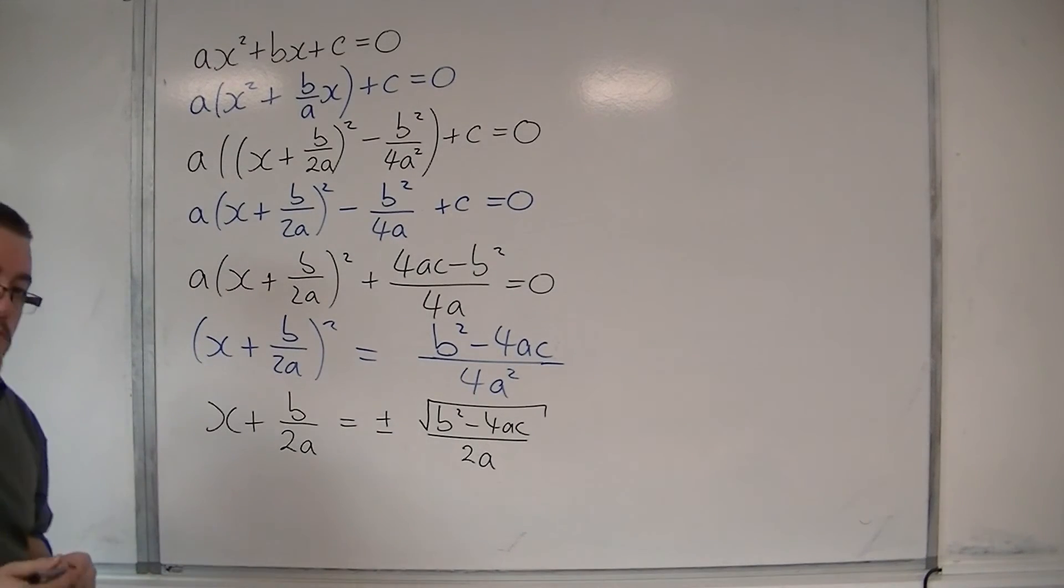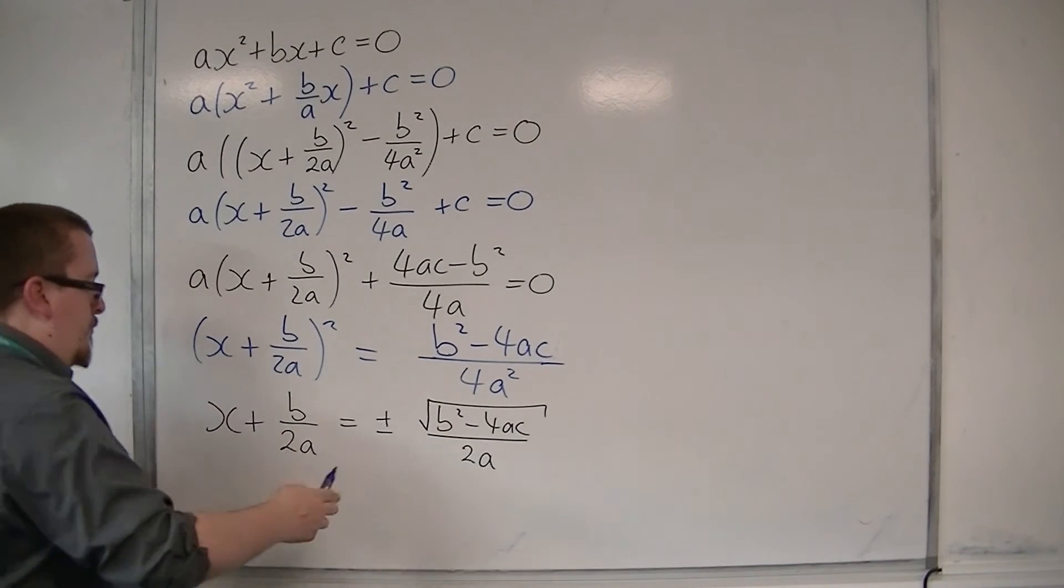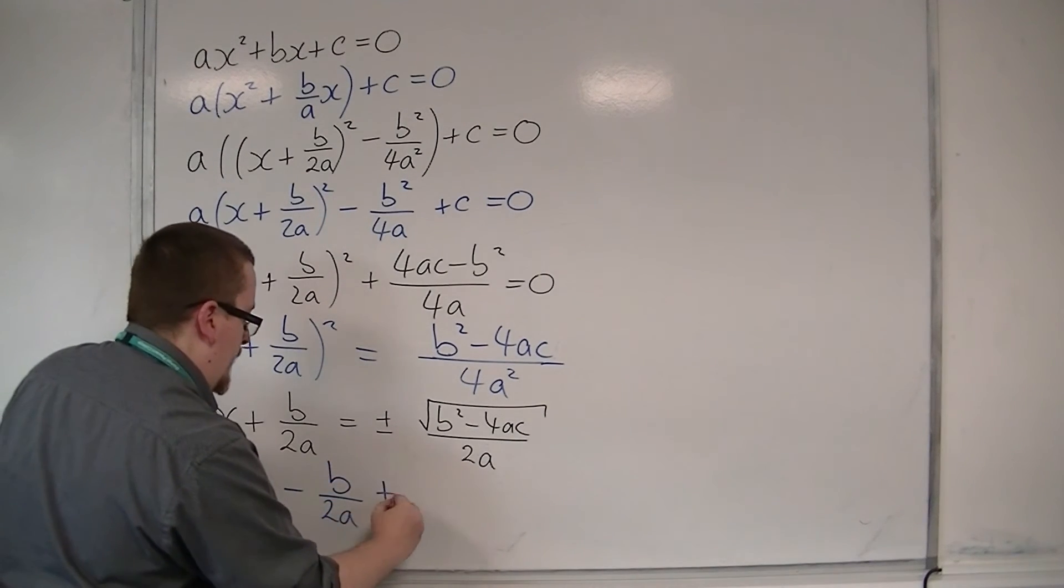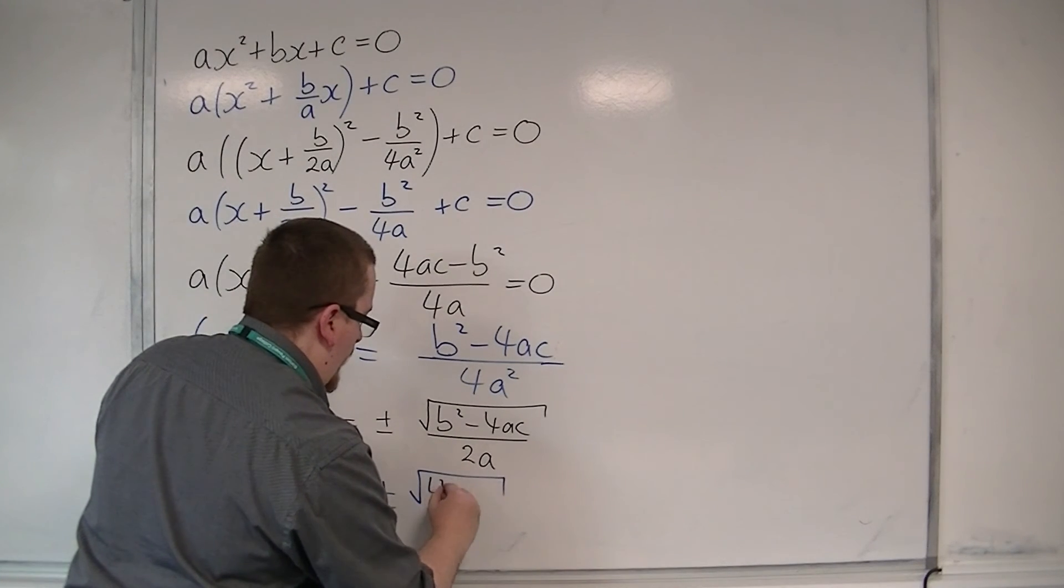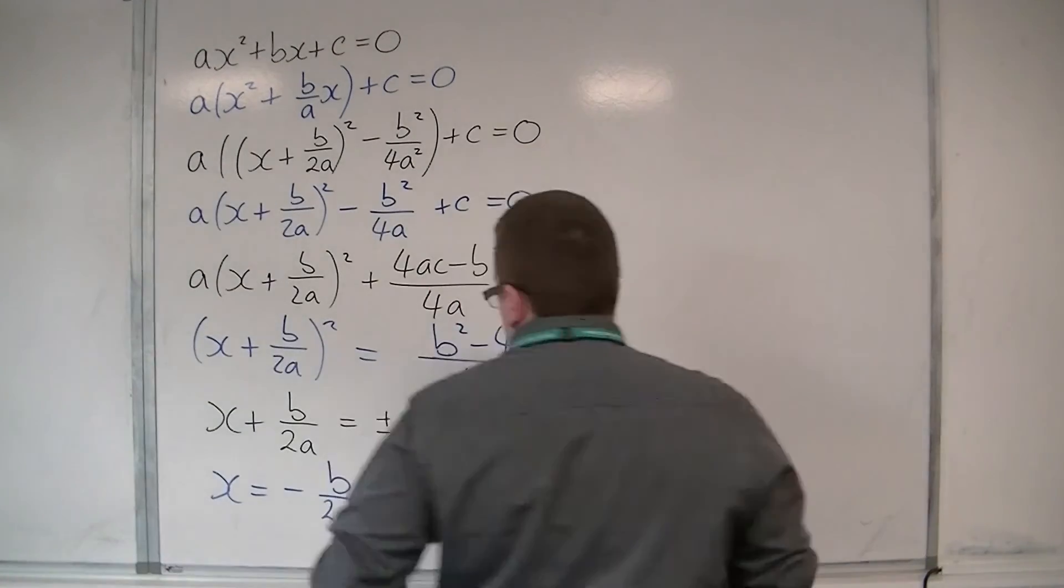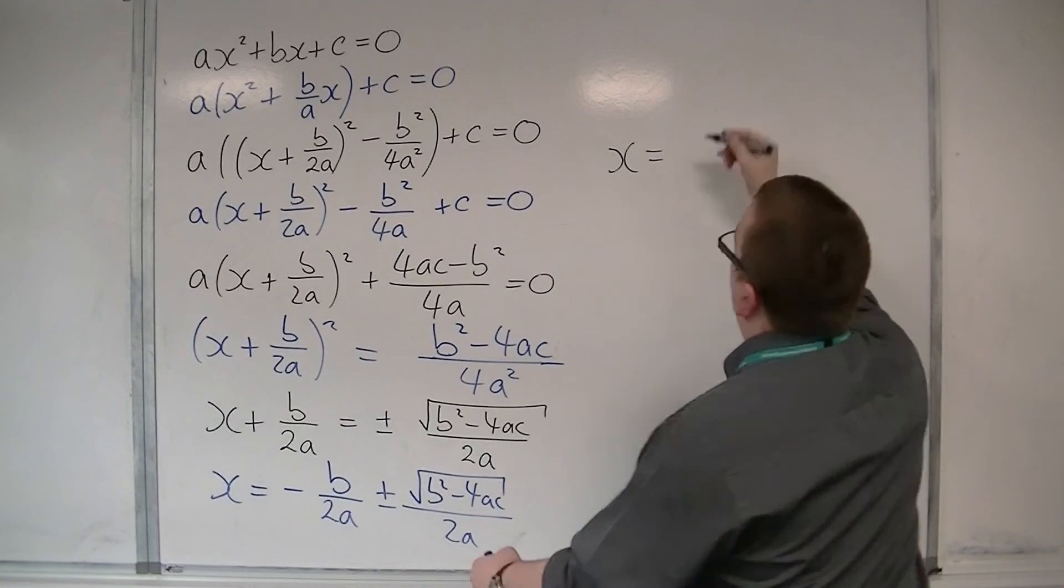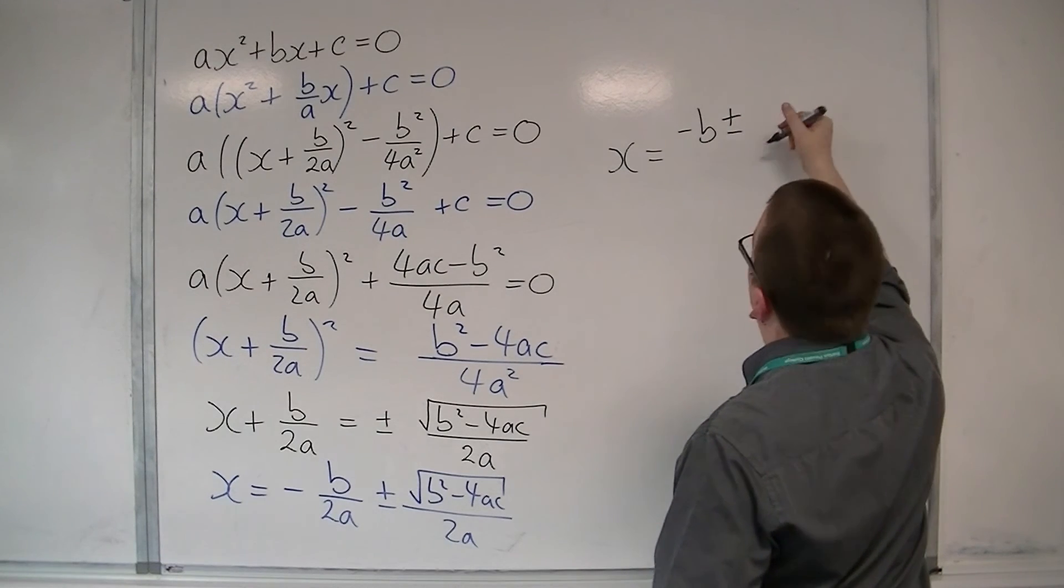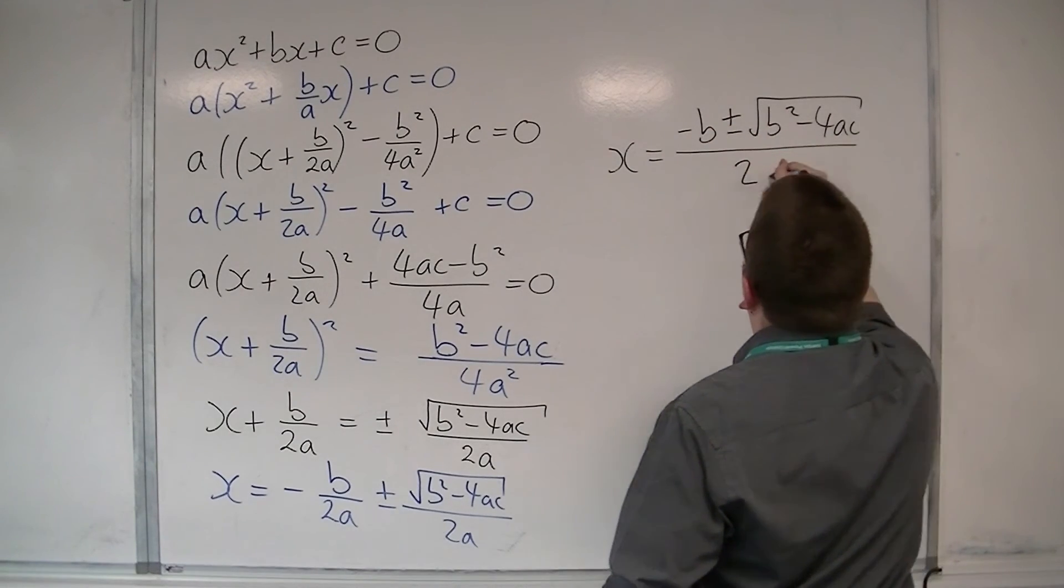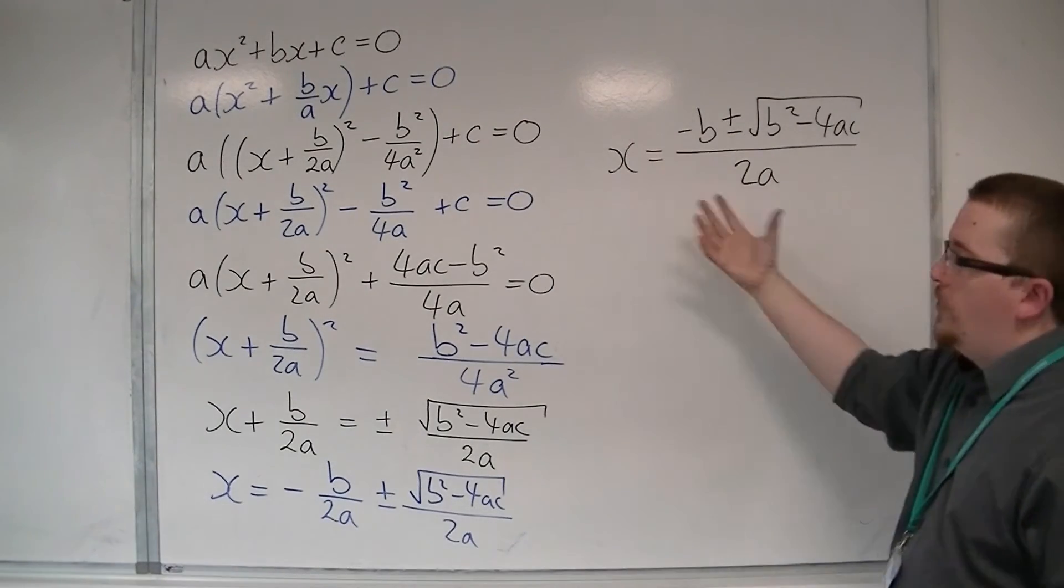I'm going to subtract b over 2a from both sides. I've got that plus or minus the square root of b squared minus 4ac all over 2a. Because I've got two terms with a common denominator, I could write this as minus b, put it over the same denominator, plus or minus the square root of b squared minus 4ac all over 2a. And that is how we can go from this original equation to the quadratic formula.